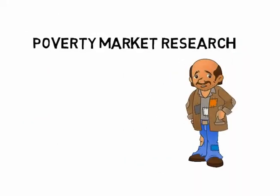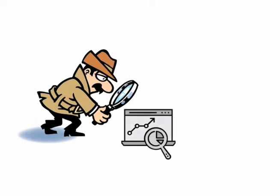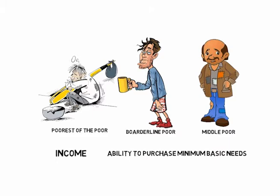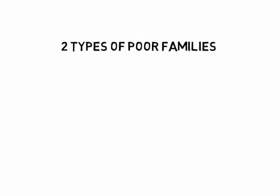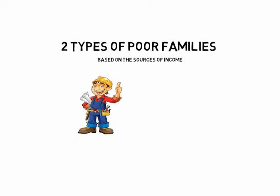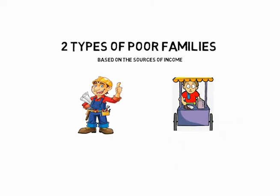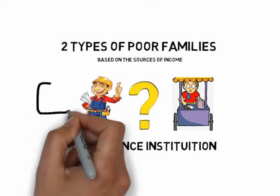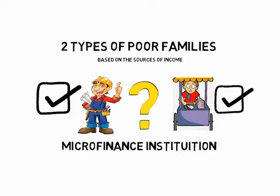A social market researcher wanted to establish the market feasibility of setting up a microfinance institution to serve the needs of the poor. However, she found out that there were different segments of the poor: the poorest of the poor, the borderline poor, and the middle poor — classified according to income and ability to purchase minimum basic needs. It was also discovered that there were two types of poor families based on income sources: those who derive income from full-time or part-time jobs, and those who relied on self-employment — otherwise known as the entrepreneurial poor. The microfinance institution had to decide which segment to lend money to: the poorest of the poor for social purposes, or the entrepreneurial poor for economic development purposes.